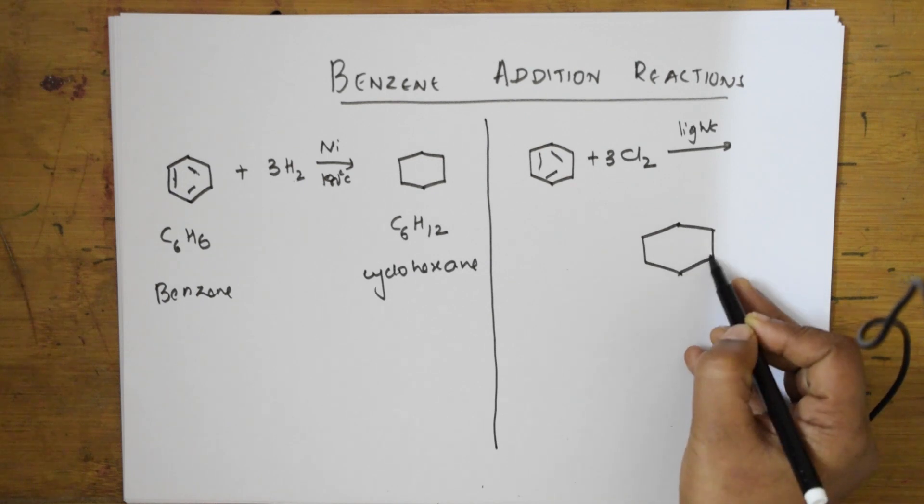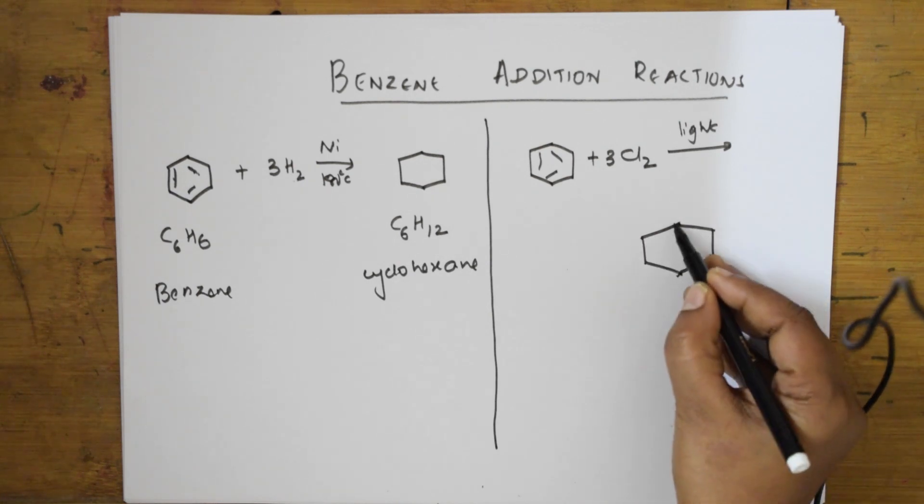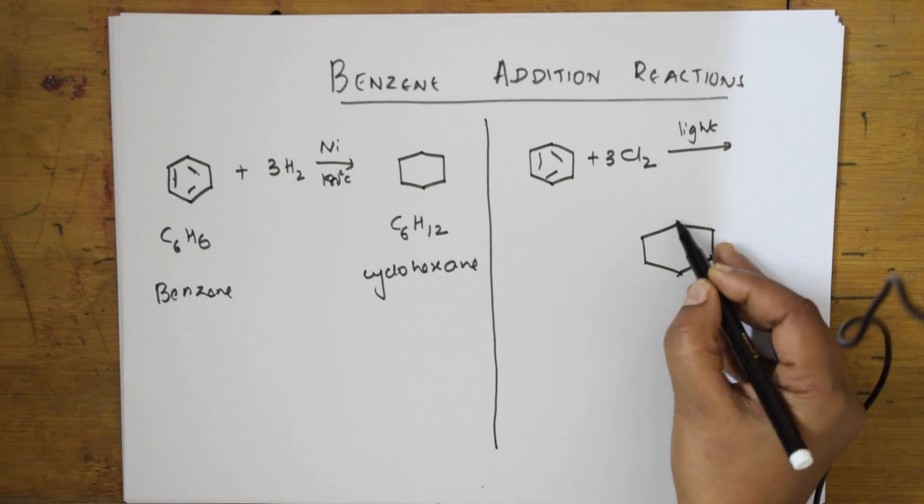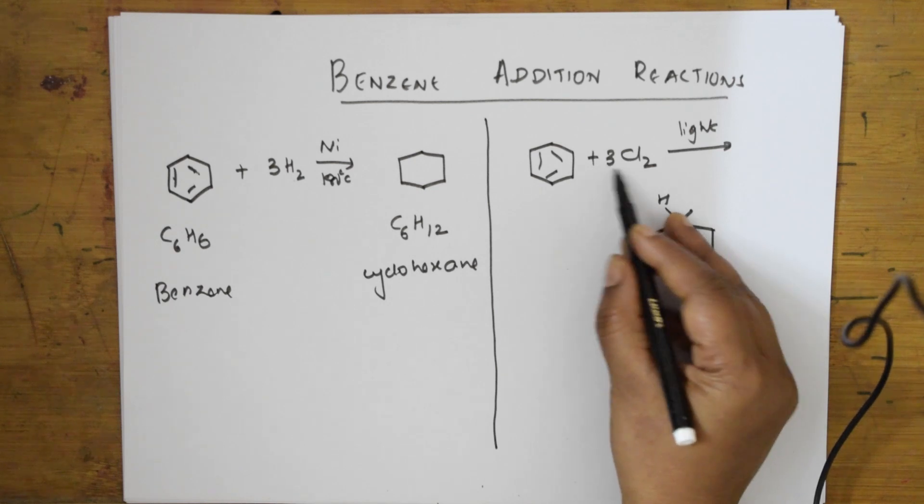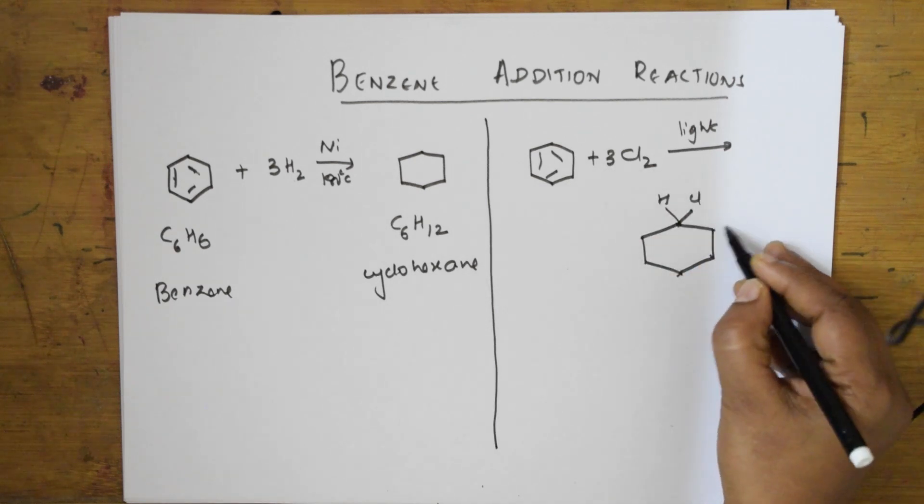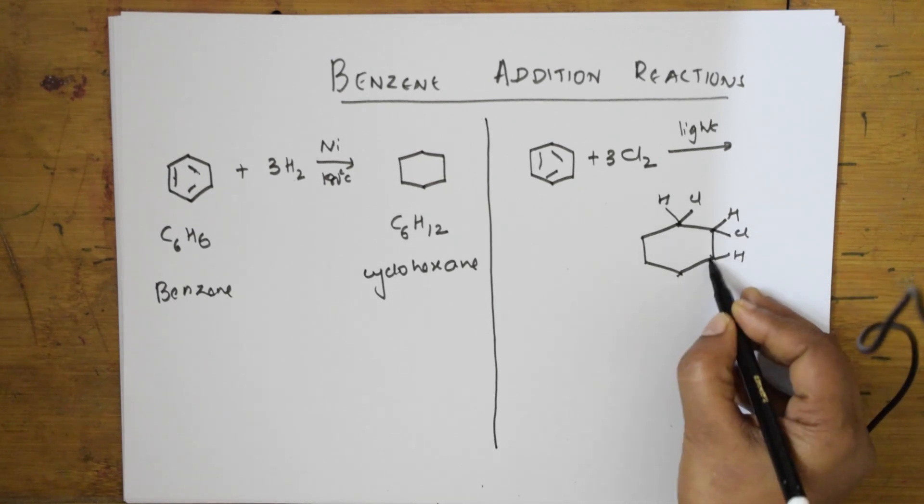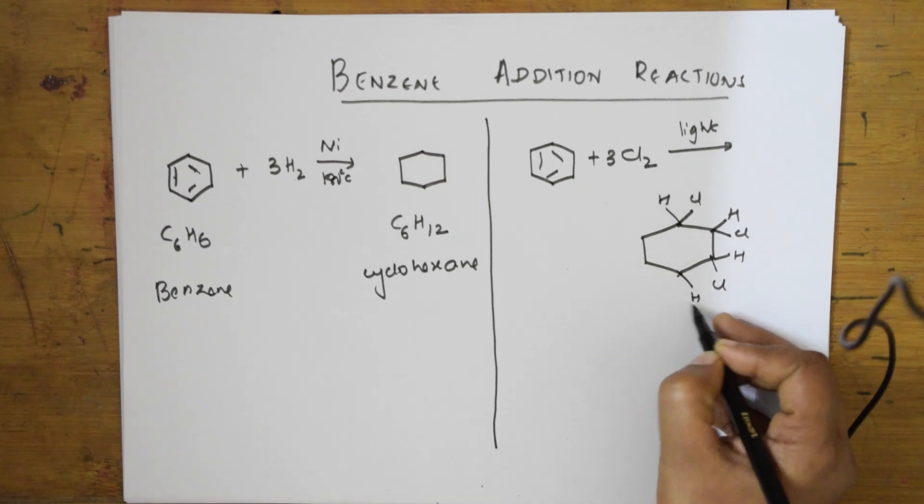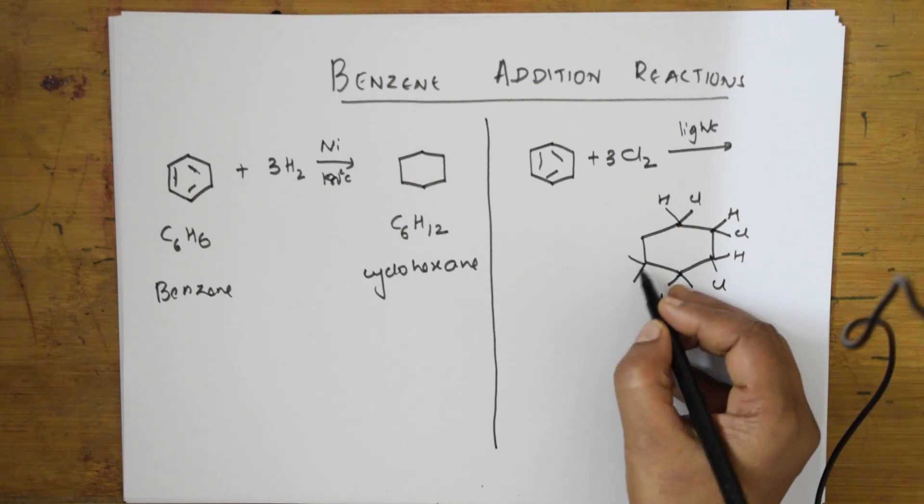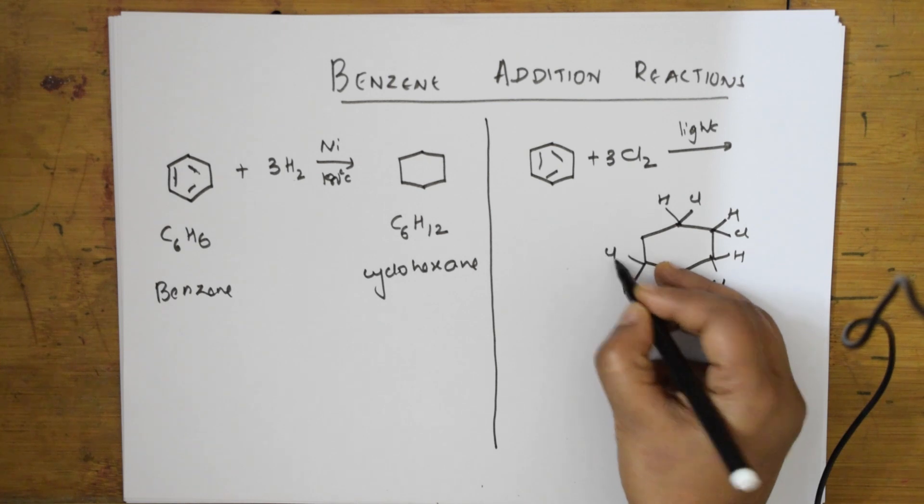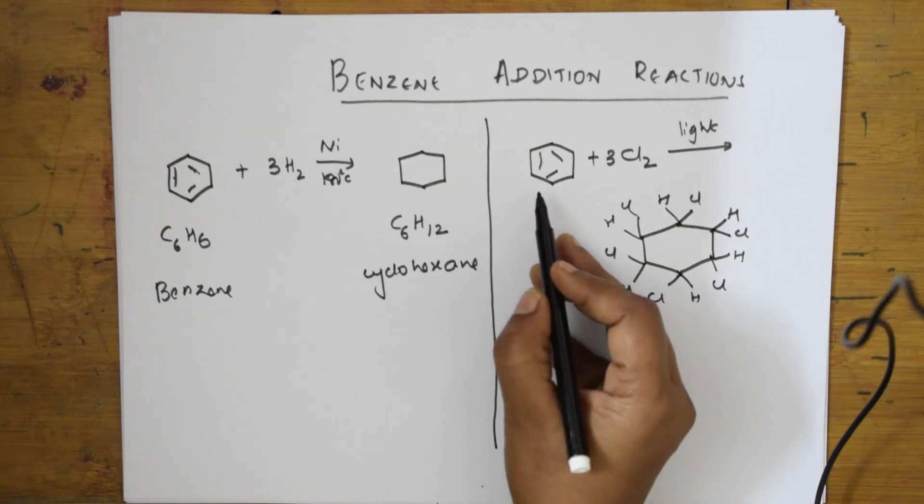Everywhere there is carbon and hydrogen. The hydrogen which is there opens up and the chlorines add. One chlorine adds here, the hydrogen bond breaks. One more chlorine. Hydrogen, one more chlorine. Hydrogen, one more chlorine. Again the same. Hydrogen, one more chlorine. Hydrogen, one more chlorine.